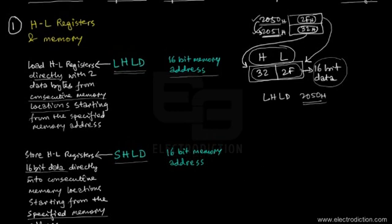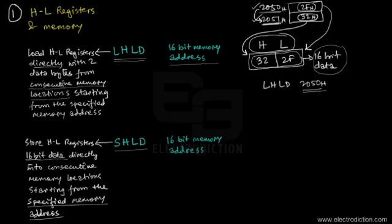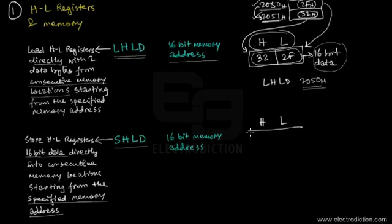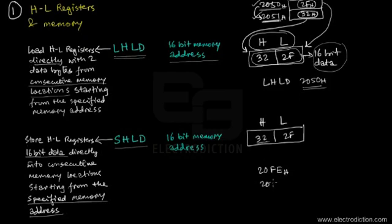We perform the reverse of the previous example. Say that the HL register pair is loaded with 16-bit data — that is 32H in register H and 2FH in register L. Now let's say we want to store this 16-bit data into corresponding memory locations: 20FEH and 20FFH. These two locations are empty and we want to load them with the data bytes present in the H and L registers.